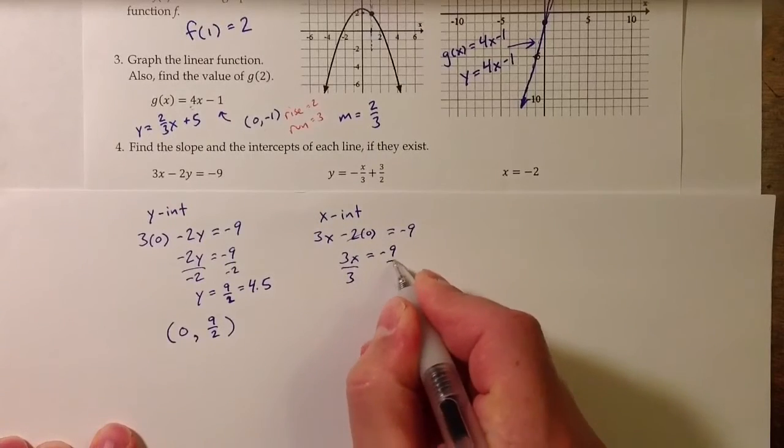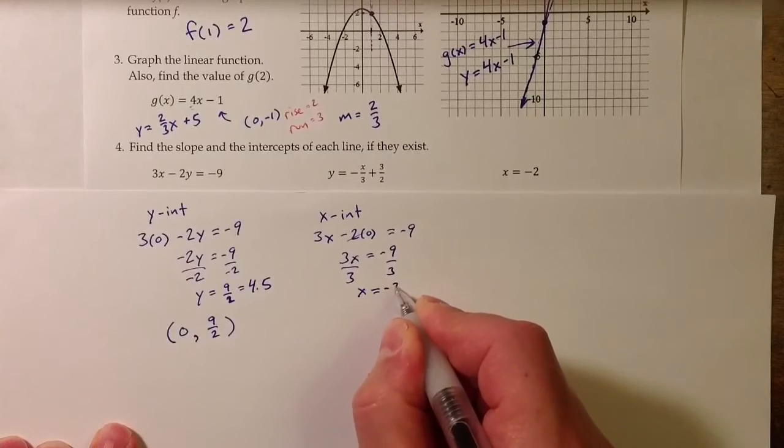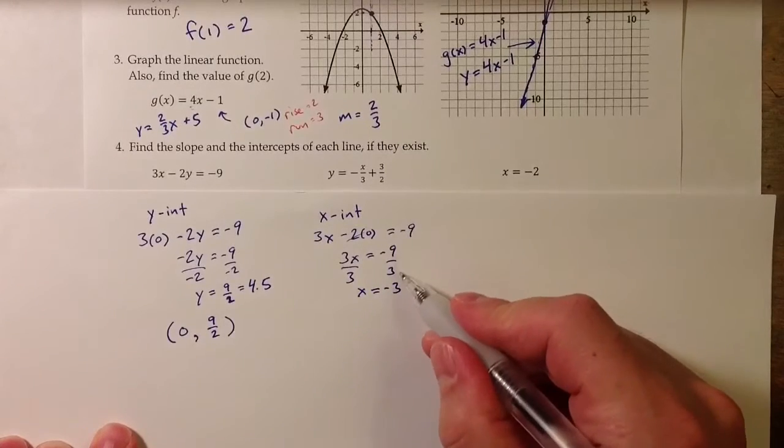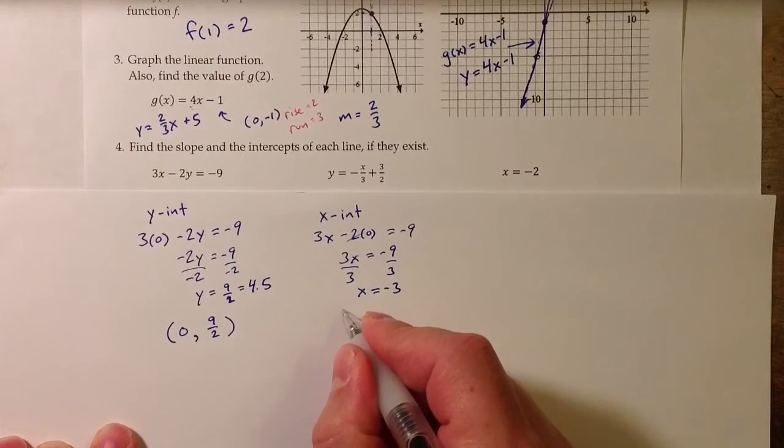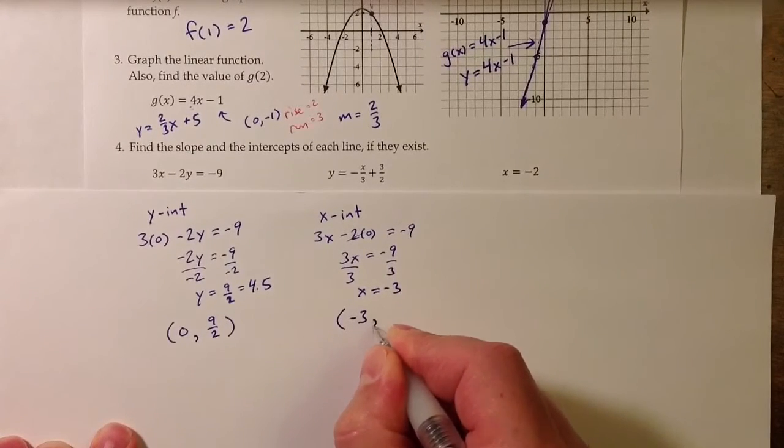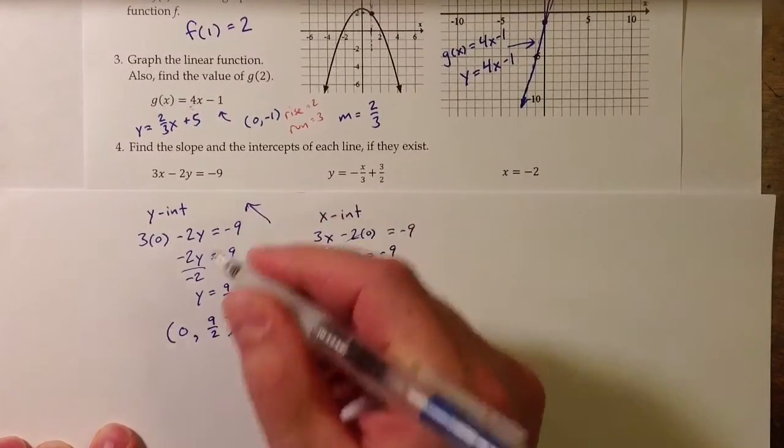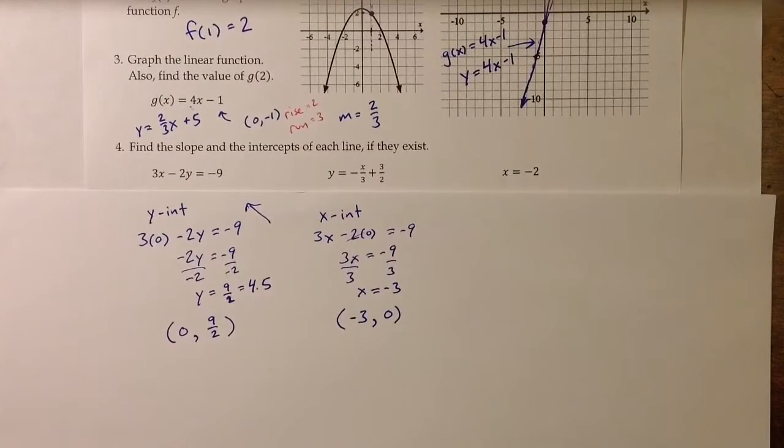Dividing both sides by 3 means that the x-value of the x-intercept is negative 3, negative 9 divided by 3. The way to fully express that is with negative 3 as the x-coordinate and 0 as the y-coordinate. So those are the x and y-intercepts of the first equation.